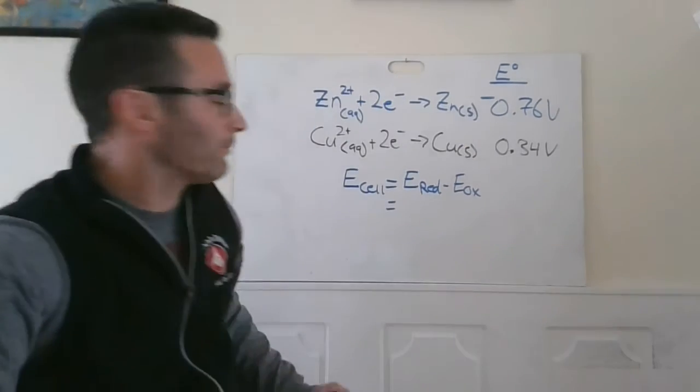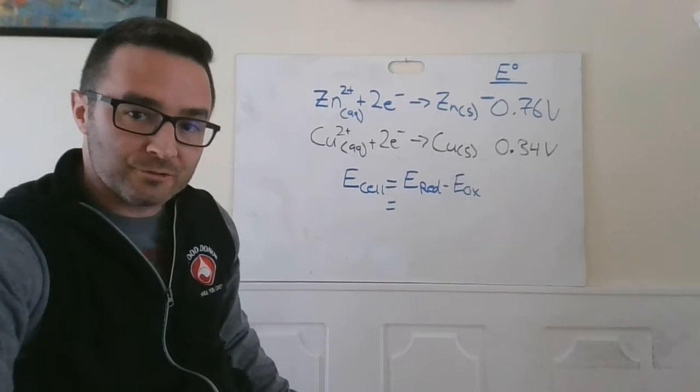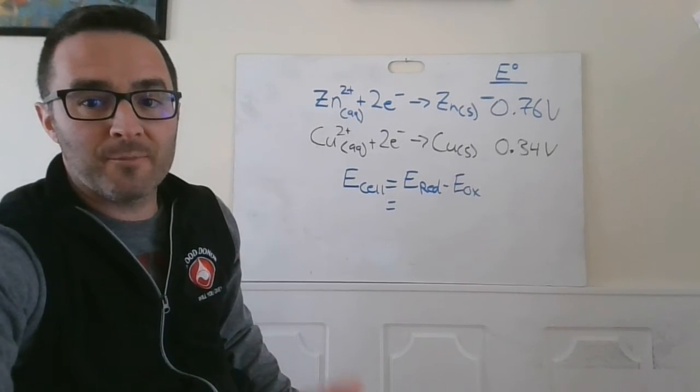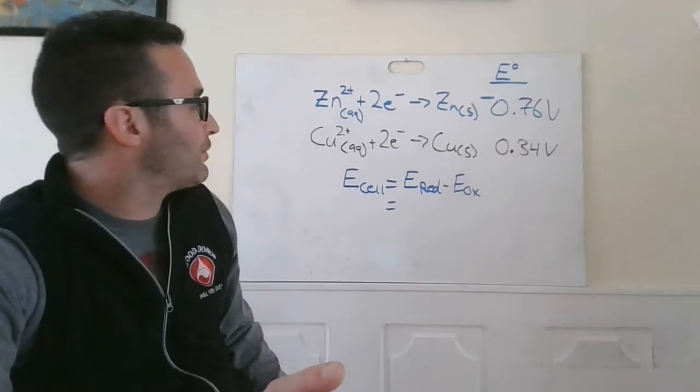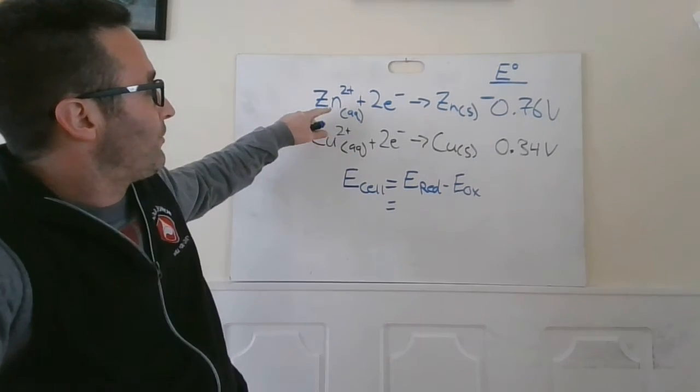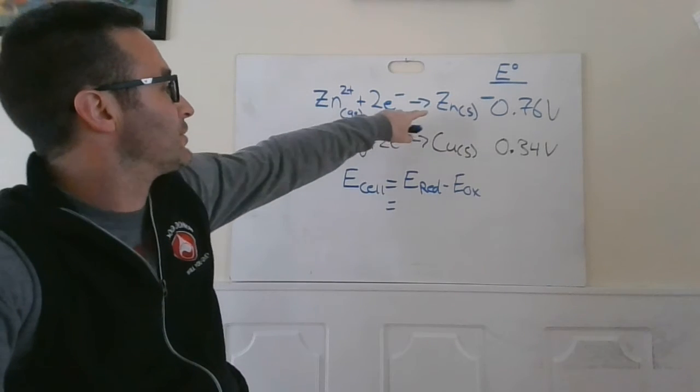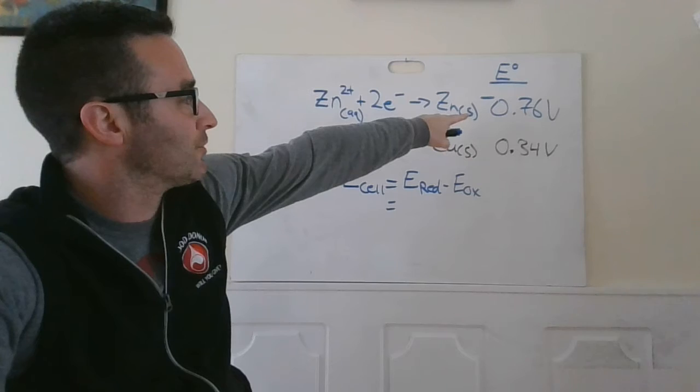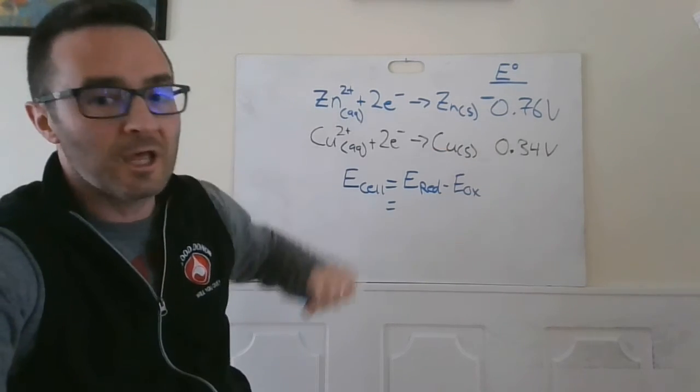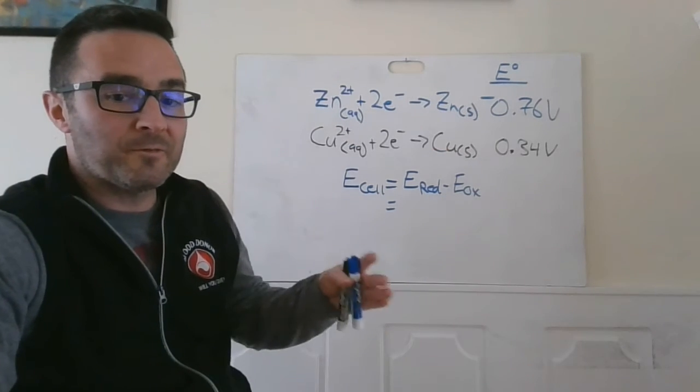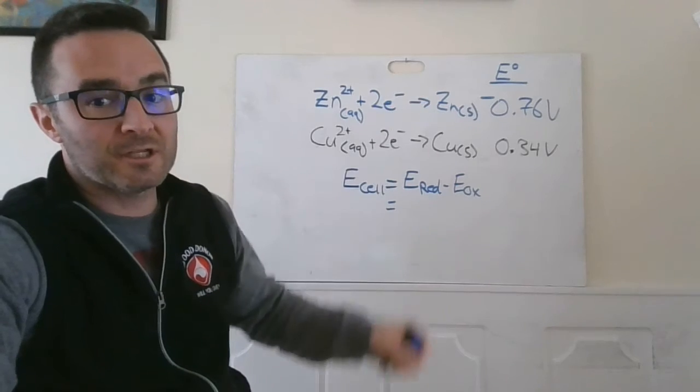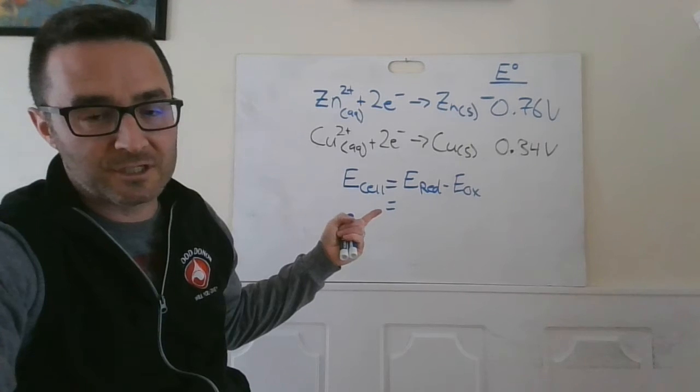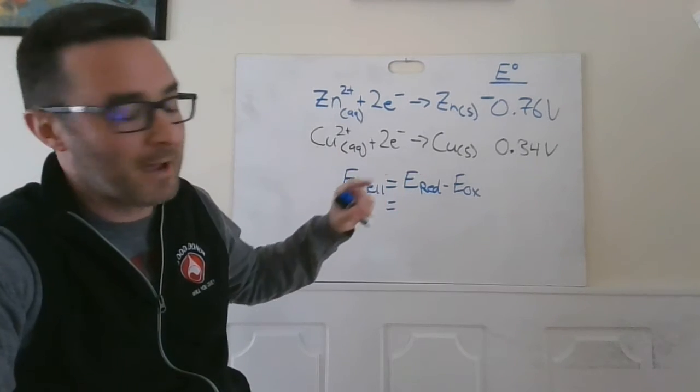So you had zinc and had copper. If you look at reduction potentials and you look at the tables, they always show the reactions in the manner of what would get reduced. So zinc 2+ ion taking 2 electrons going to the zinc solid has a negative reduction potential of -0.76 volts. That means that the reaction going in that direction isn't likely to happen, but it means the oxidation reaction would have a positive 0.76 volts. Let's see what the other thing would happen then.